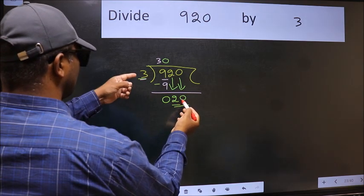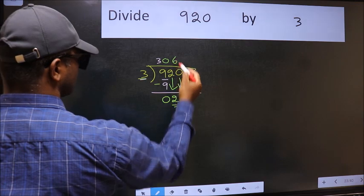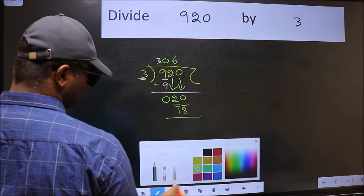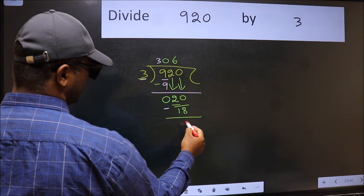Then only we can bring this number down. Now 20. A number close to 20 in 3 table is 3 times 6, 18. Now we should subtract.